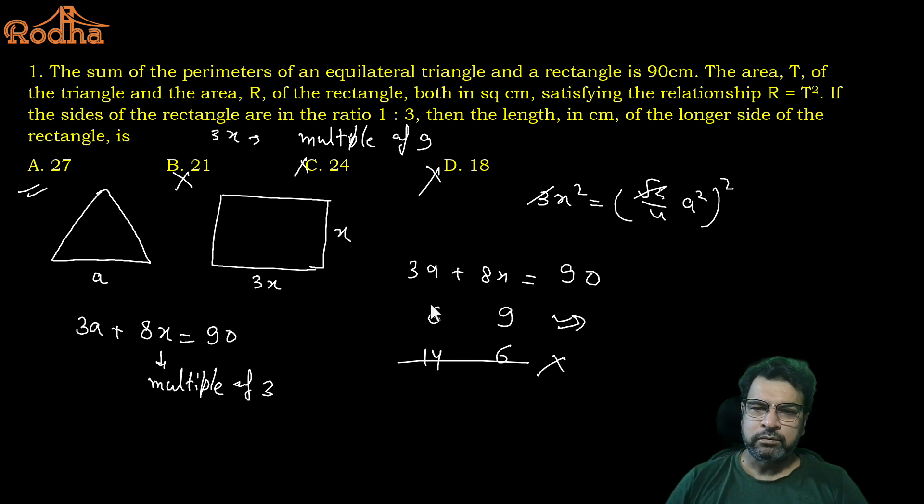Only option left is 6 and 9, and for which option is that, option A. So without much solving, we can solve this question using options. Otherwise obviously you can put the values and make equation, solve it, that is the normal approach. But I hope the logic is clear. That is your first question for the smart trick.